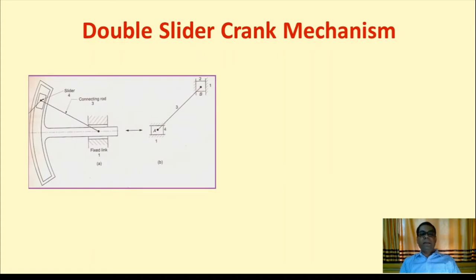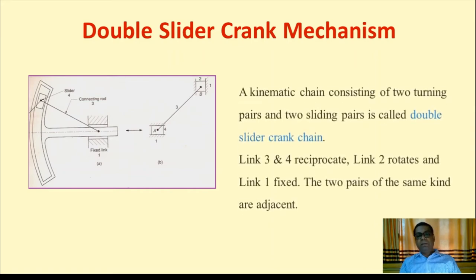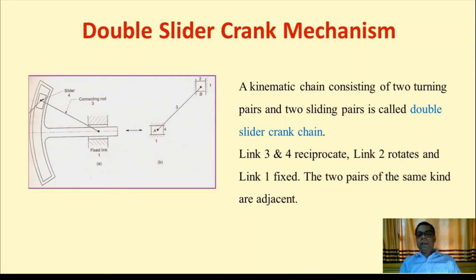The double slider crank mechanism has two sliders present. In the simplified figure, two sliders A and B are shown with one fixed support, where links 2 and 4 are slider blocks and link 3 is the connecting rod. This chain consists of two turning pairs and two sliding pairs, called a double slider crank chain. Link 3 and 4 reciprocate, link 2 rotates, and link 1 is fixed. The two pairs of the same kind are adjacent.